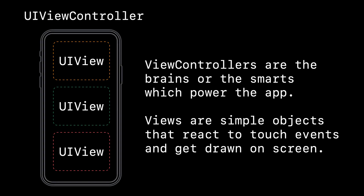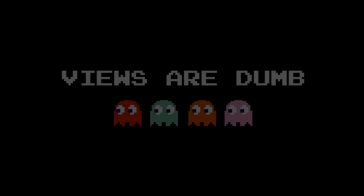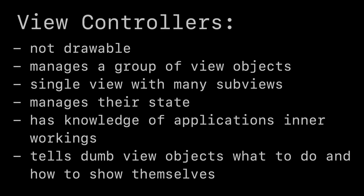Before looking at view controller extraction code, let's go over when we'd want to extract a view versus a view controller. View controllers contain views — view controllers are the brains that power our app, while views are simpler objects that react to touch events and get drawn on screen. Views are simple objects we draw on screen, they may contain sub-views, they can get touch events, but they know nothing about the structure of our application. The headline: views are pretty dumb.